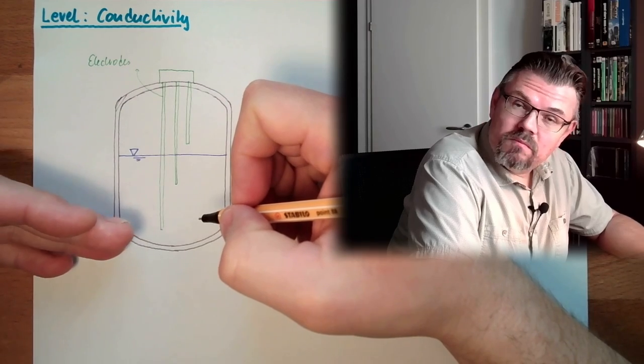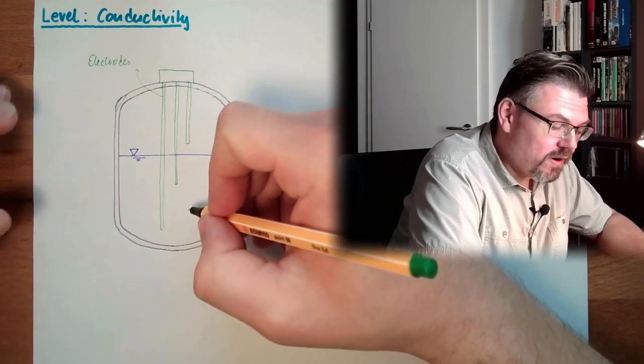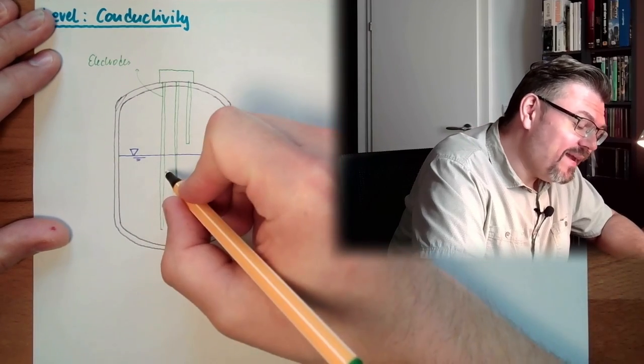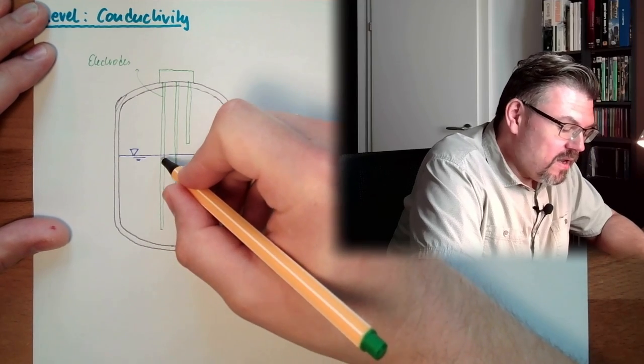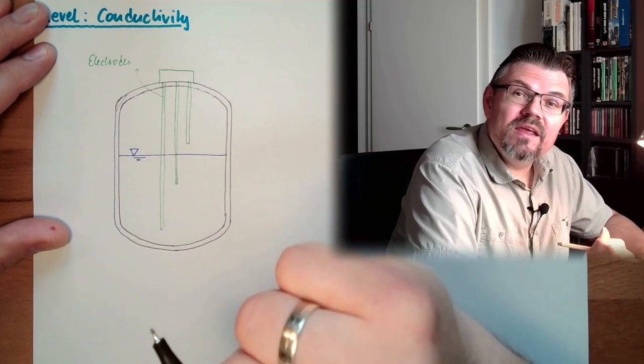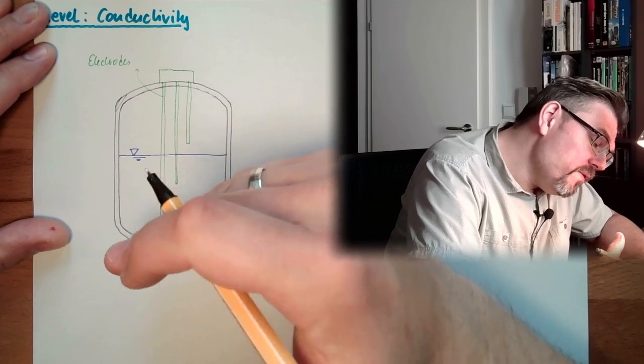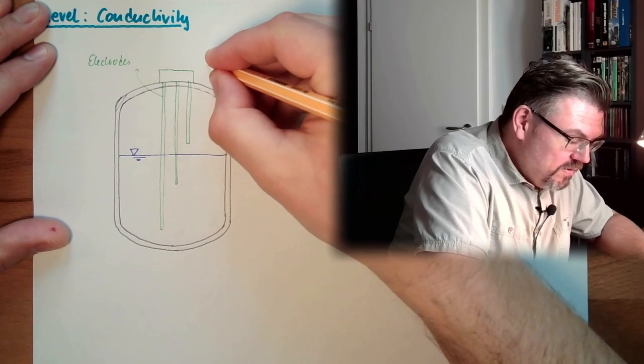So if there is, you can measure here, there is current running. Then you can determine if things are in contact with the liquid or not.